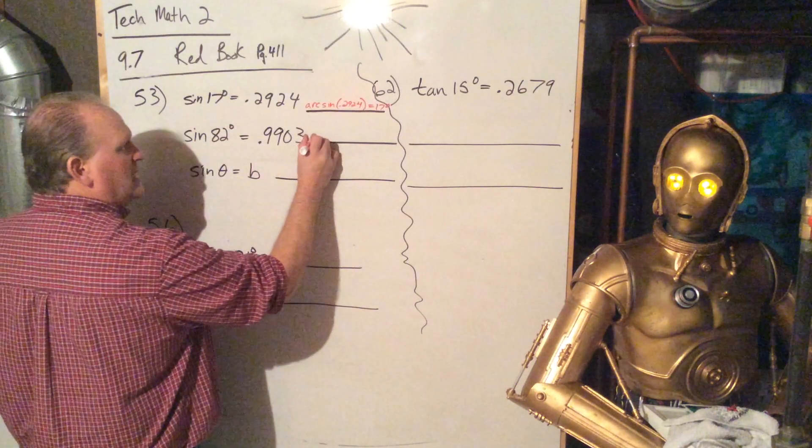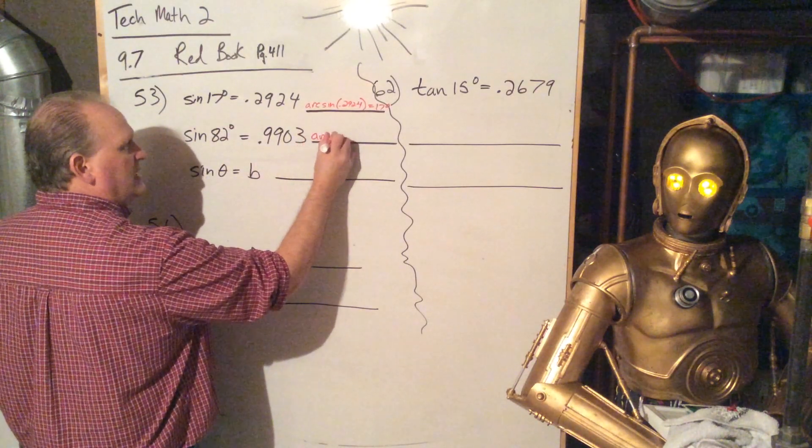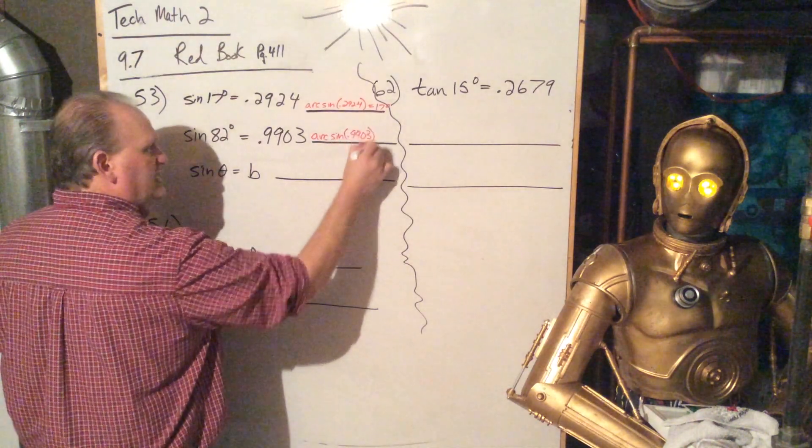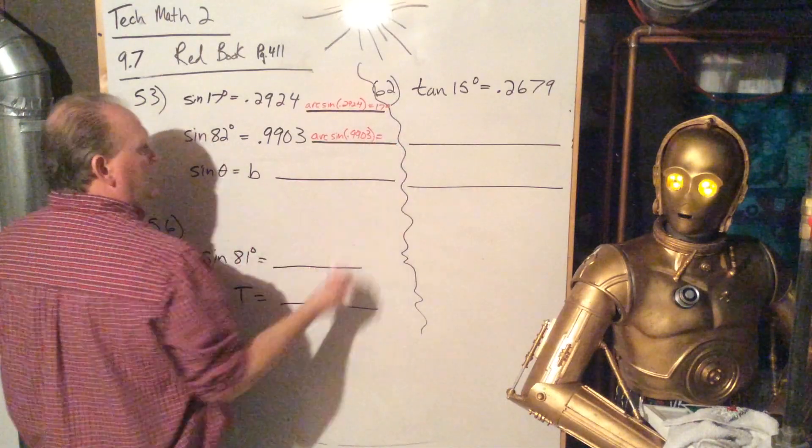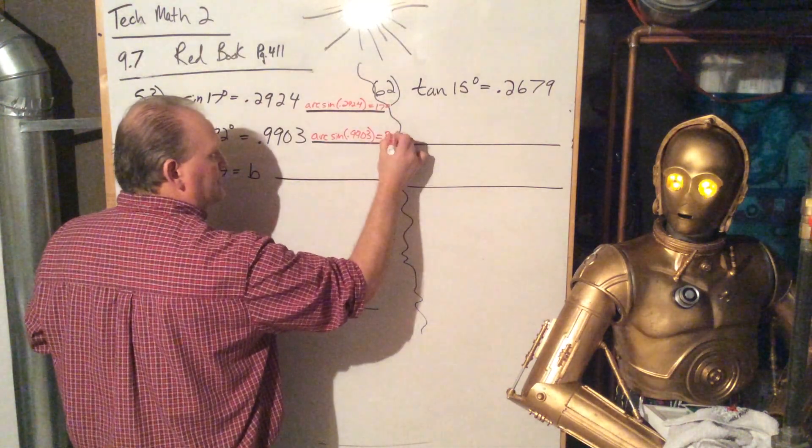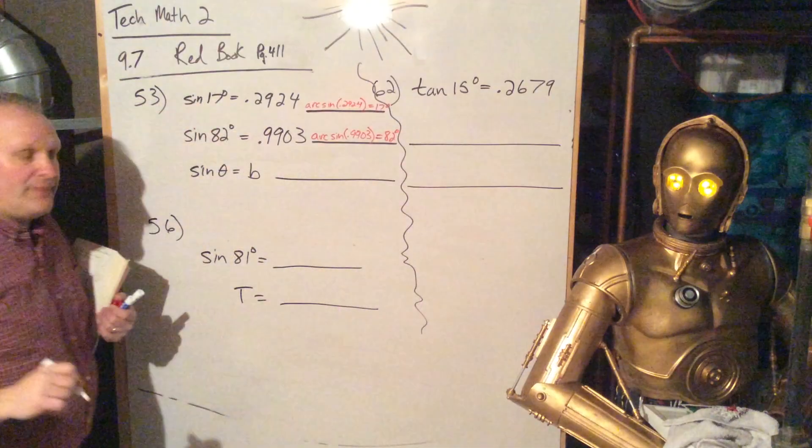So this one is going to be arc sine of 0.9903. And if you did tick that in your calculator and hit enter, it would be right around 82 degrees. It's unlikely it's exactly 82 degrees, but probably pretty close.